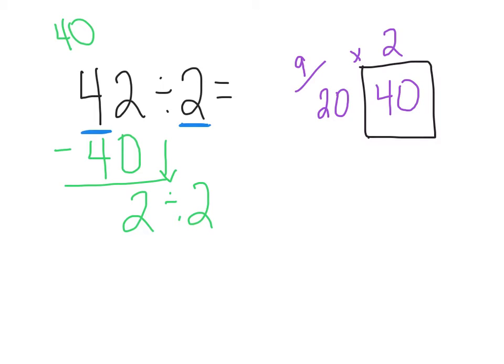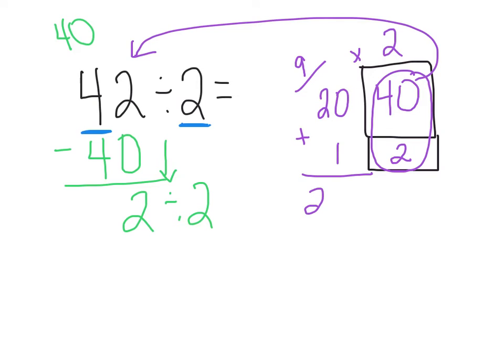How many groups of 2 are in 2? That's right, 1. And 2 times 1 is 2. Right here I have my dividend. And perfect. And so now I need to add up my quotient. And my quotient or my answer is 21.